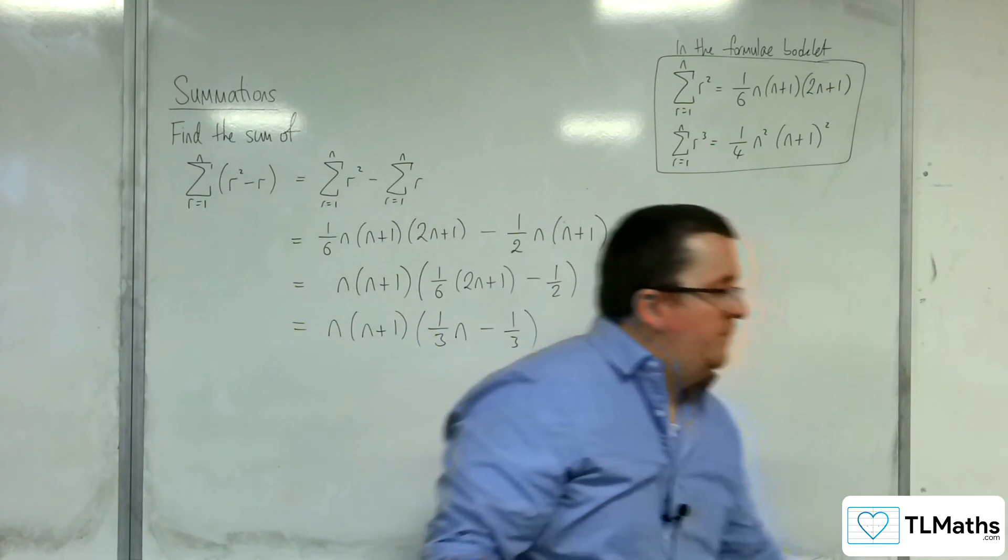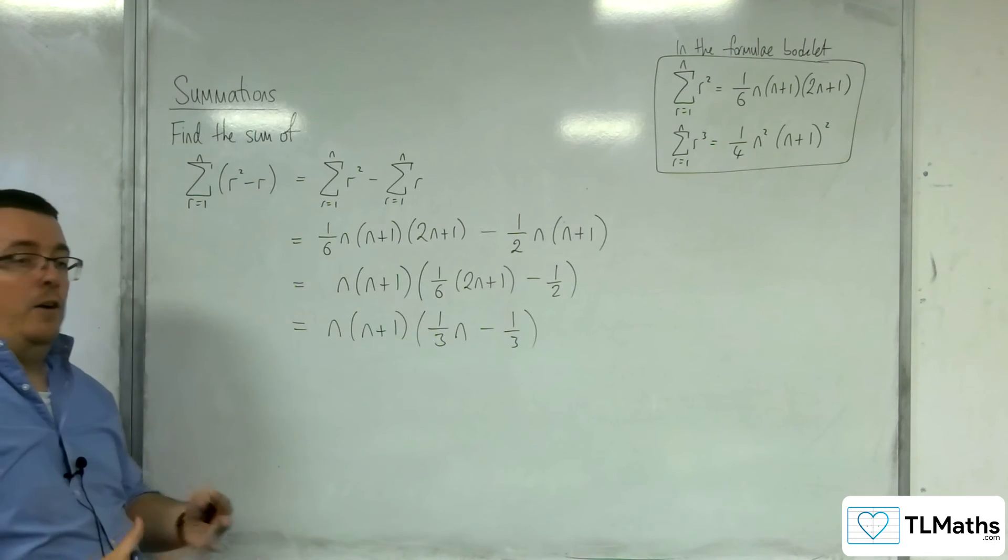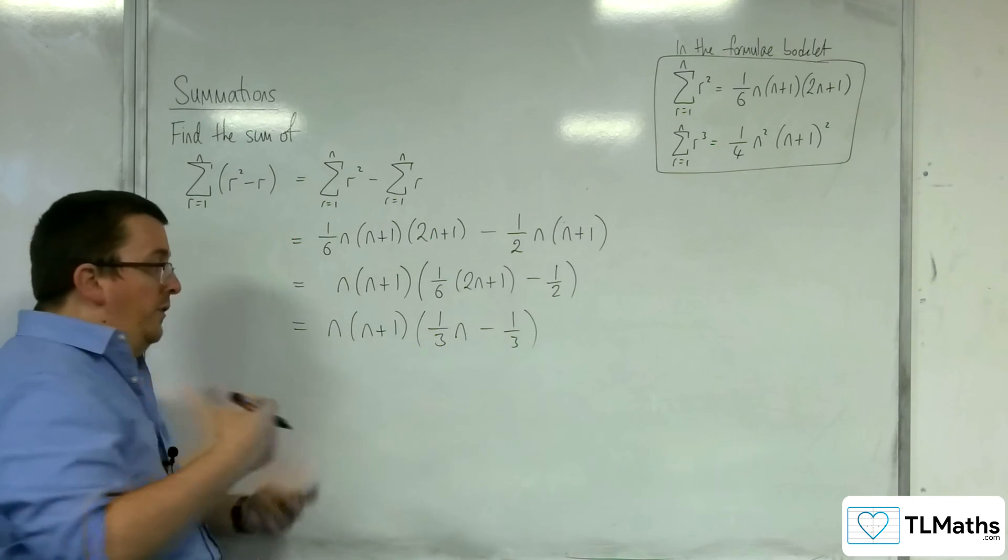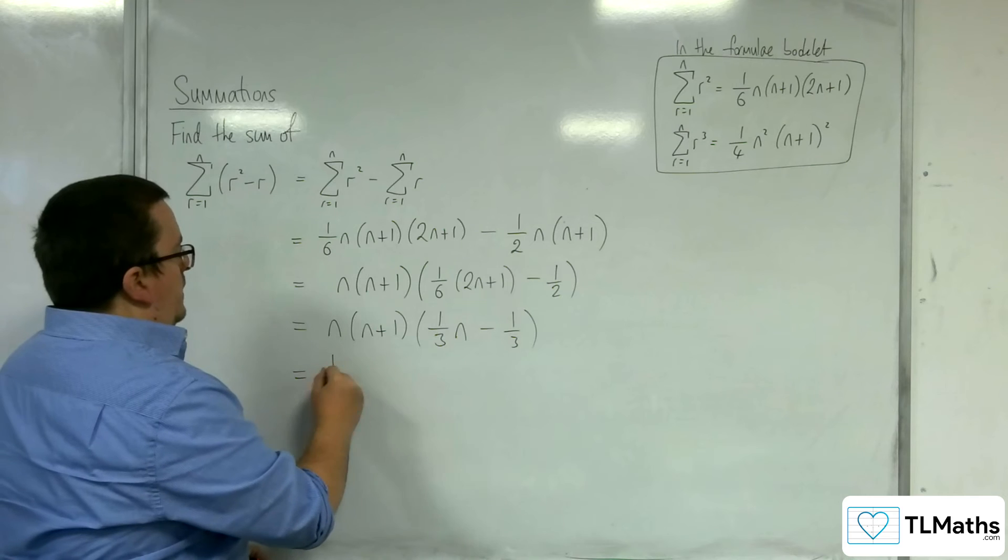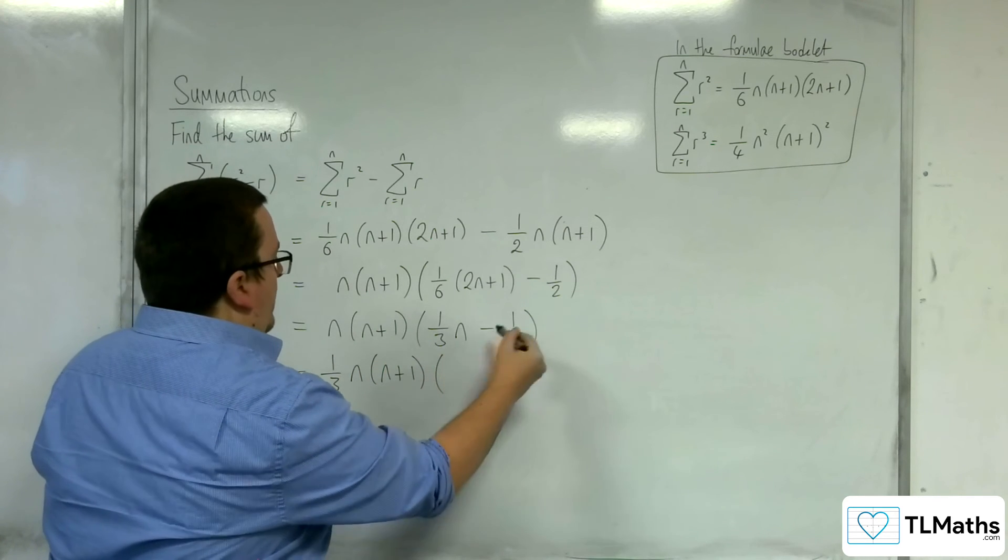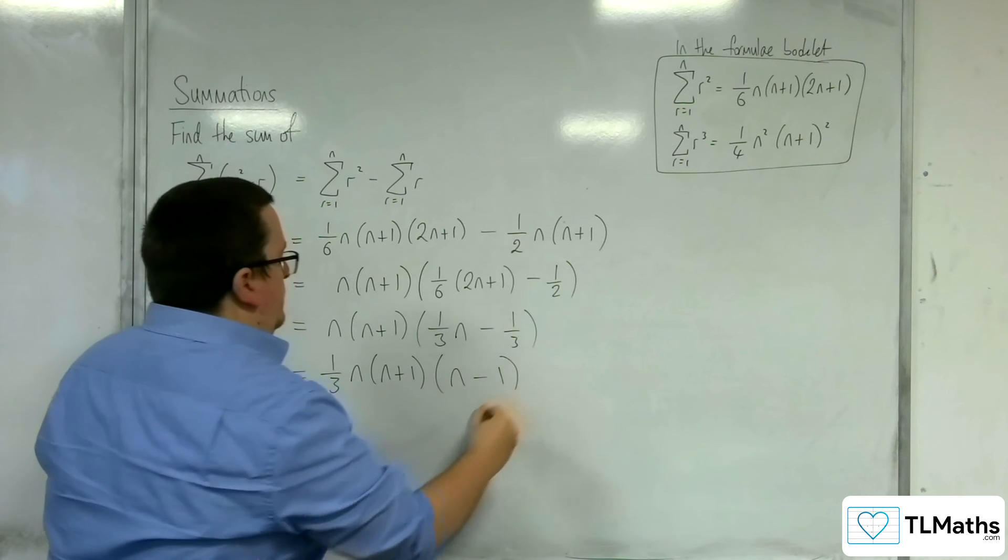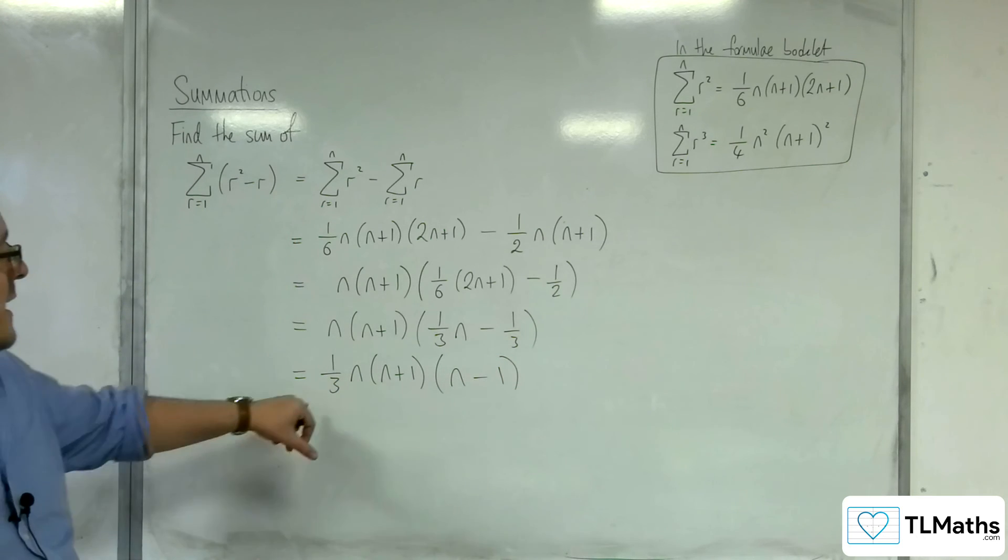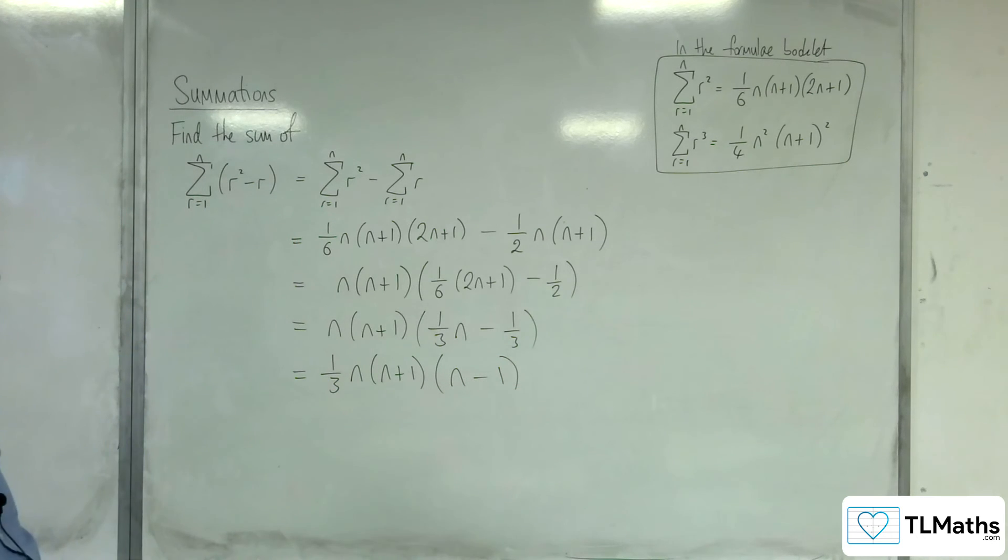At this stage now, I would be going, right, now I can factor 1 third out. And maybe at this stage, it seems a little bit more obvious that that's something you can do. So you could leave it like this: 1 third n, n plus 1, n minus 1.